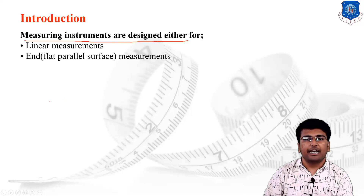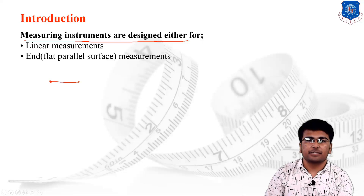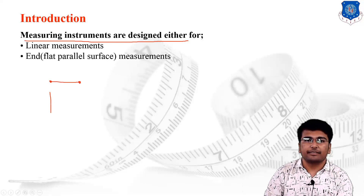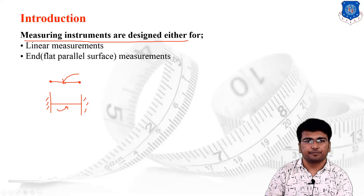If I have to design a measuring instrument, I can measure the distance between two particular points — that is linear measurement — or I can measure the distance between two surfaces. Suppose this is surface one and surface two; then I will perform end measurement.